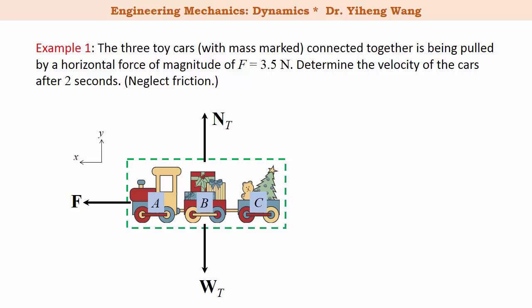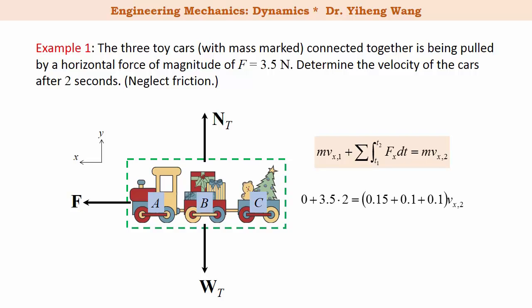We start with the free body diagram of this system. Since there is only motion along the horizontal direction, we write the principle of linear impulse and momentum in scalar form along the x direction. The initial velocity is zero, the force is constant, so its impulse is 3.5 multiplied by 2 seconds, which equals the total mass multiplied by the final velocity. Solving gives Vx2 equal to 20 meters per second.